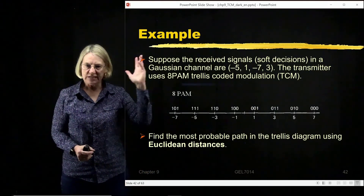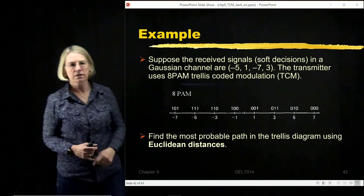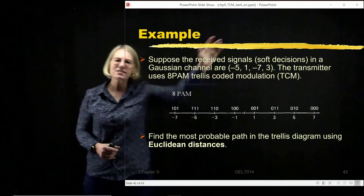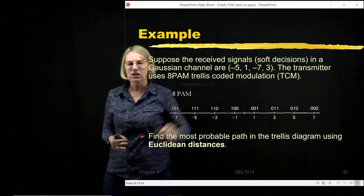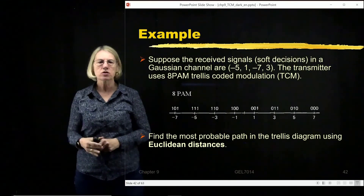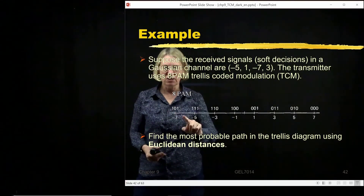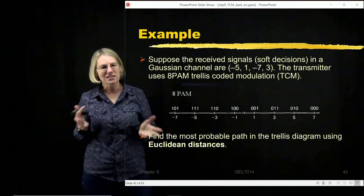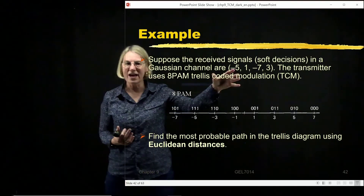This is coming from an old exam question. Suppose that you received symbols with Trellis Coded Modulation which are minus 5, 1, minus 7, 3. These are soft decisions. I'm giving you nice round numbers — it could have been minus 5.3 because it's a soft decision. It looks like a hard decision because it looks like I quantized it, but that's just to keep the numbers round. Euclidean distance would be the same calculation even if these were not exactly round.